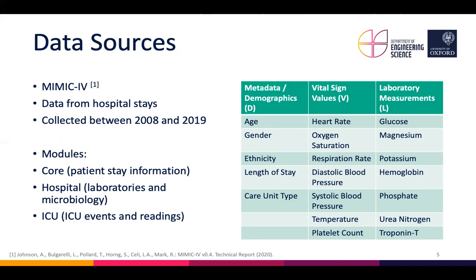There's a table on the right which lists some examples of the data we're using from this database. For our metadata, we have things like age and gender. For vital sign values, we're looking at things like heart rate and oxygen saturation, and laboratory measurements consist of glucose measurements and magnesium measurements.